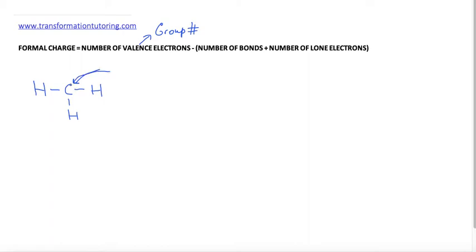The carbon in this molecule — if we look at the carbon on the periodic table — is located in group 4. Therefore, it has 4 valence electrons. Now we have to ask ourselves, how many bonds is this carbon directly attached to? It is directly attached to 1, 2, 3 bonds. So it has 3 bonds.